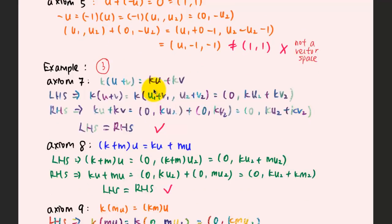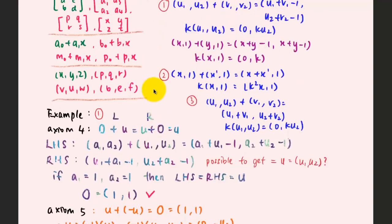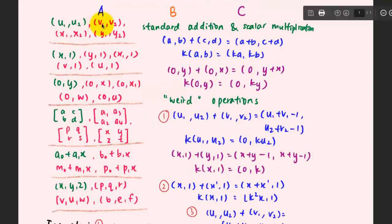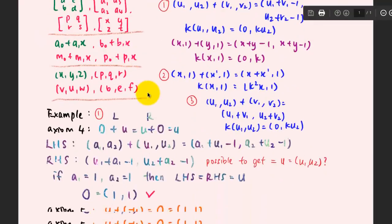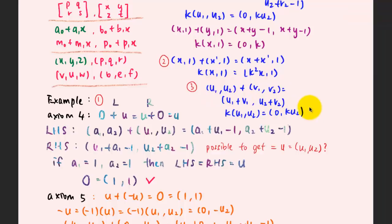Now let's look at another example. In this case I am going to use the standard addition operation but with the third scalar multiplication rule for this group of vectors, and check whether it is a vector space under this vector addition and scalar multiplication conditions.